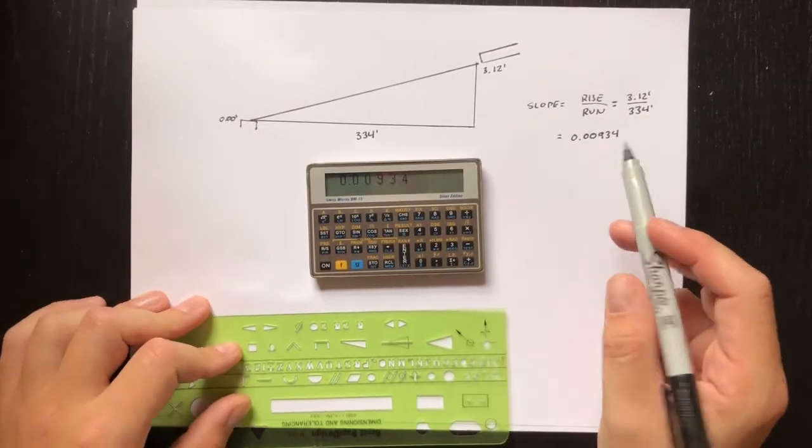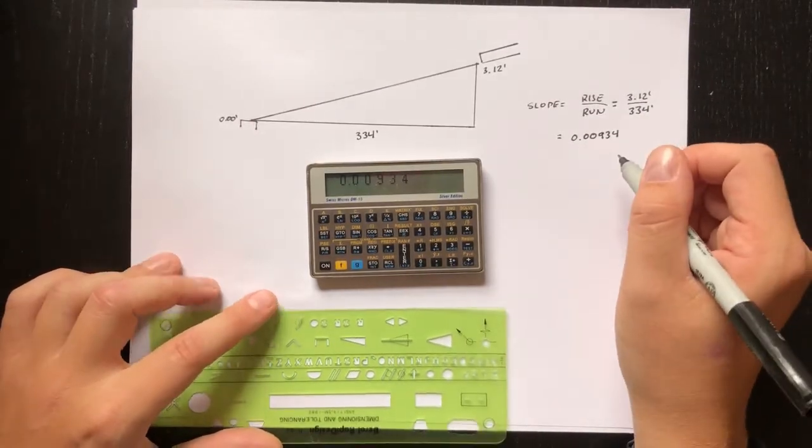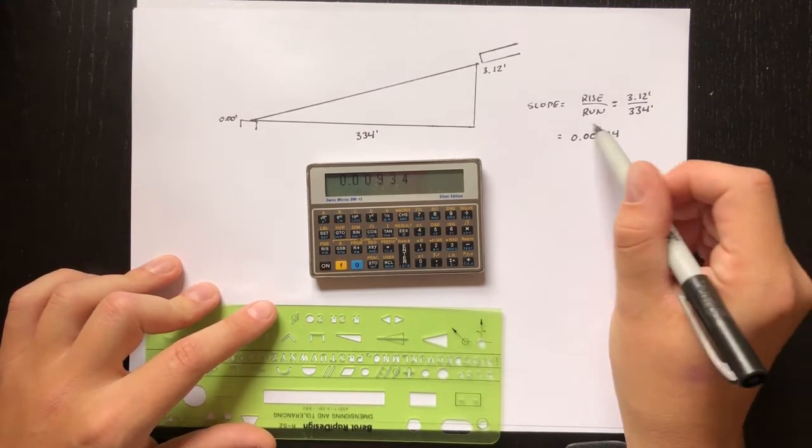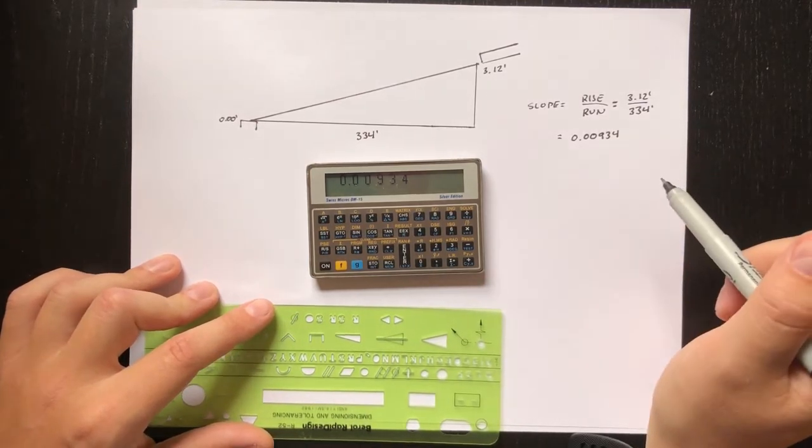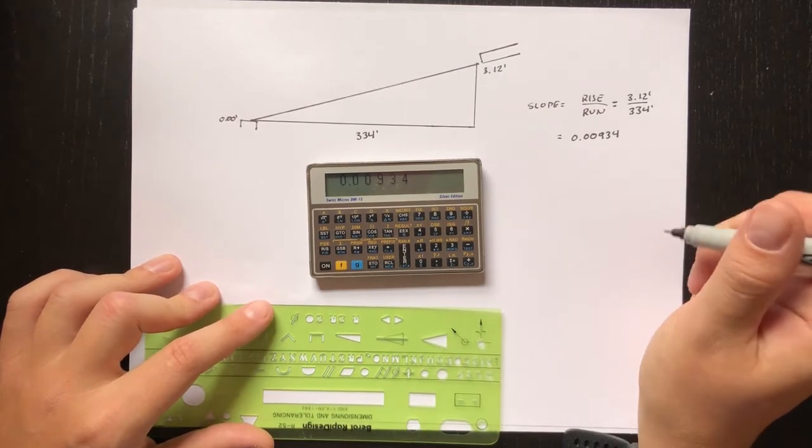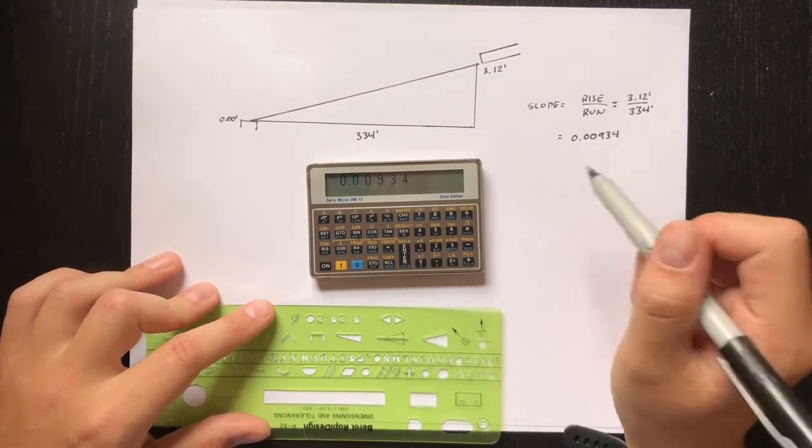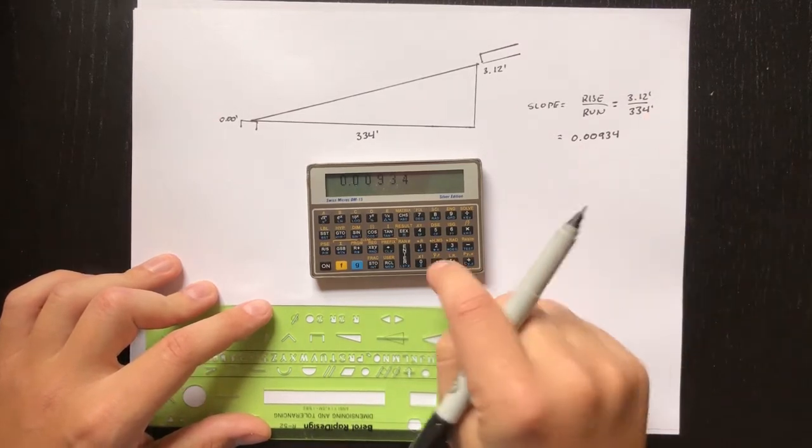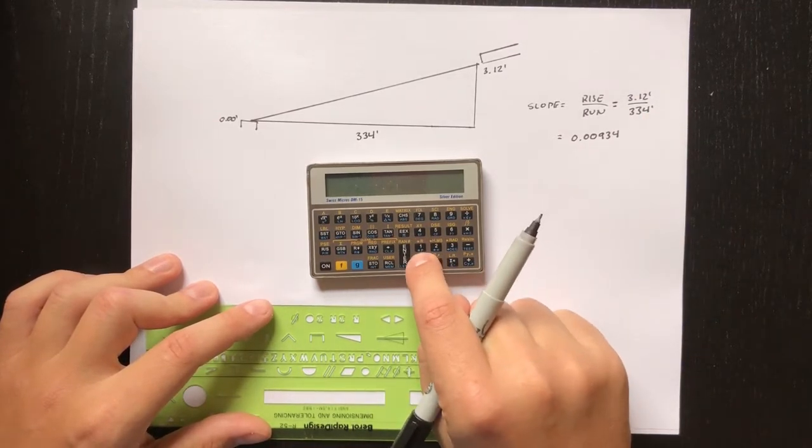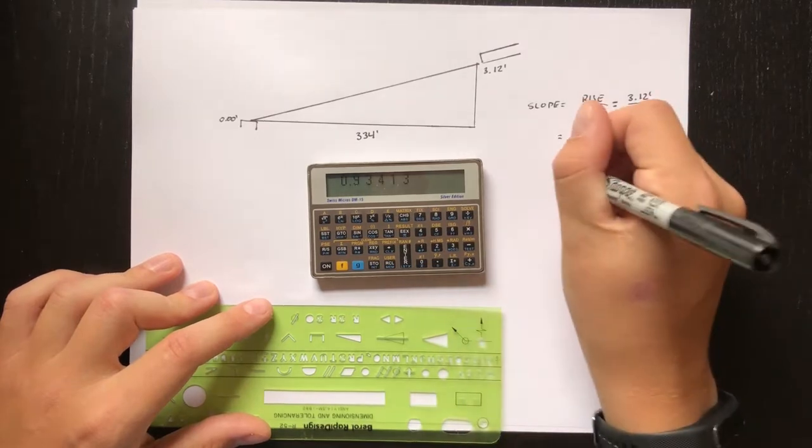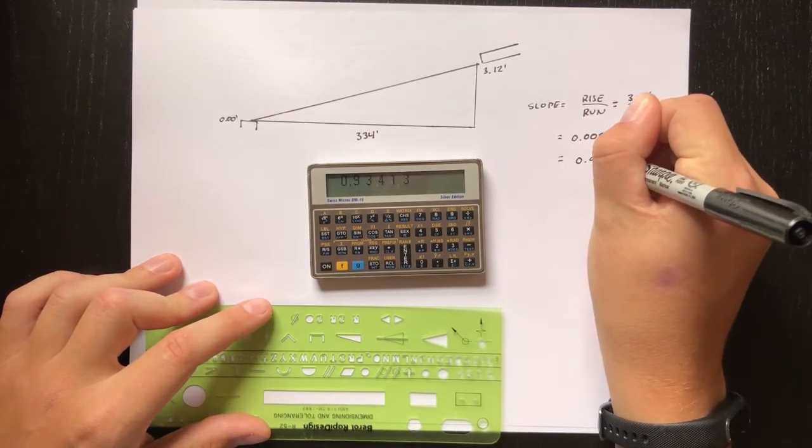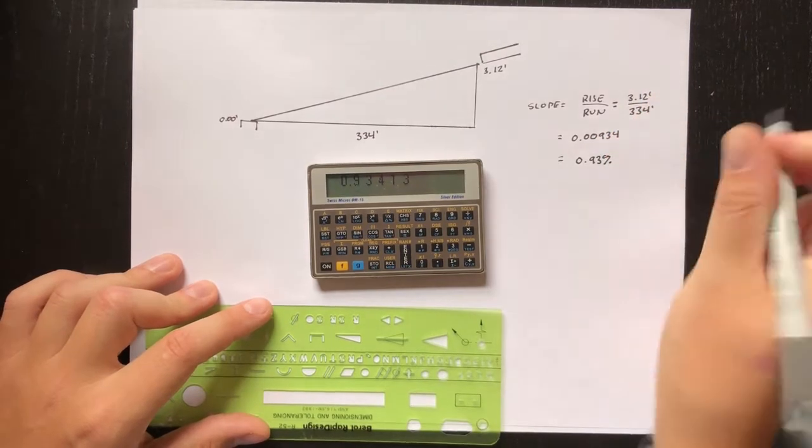But it's kind of an industry standard to report that as percent grade. Like any other percent, to go from the decimal equivalent to a percentage you multiply by 100. So say 5% is actually 0.05. To go from this to percent grade we just multiply by 100, so we get a slope of 0.93%, which is pretty shallow.